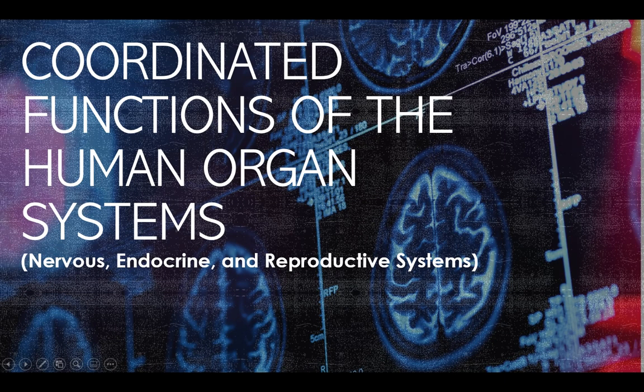Hello students and welcome to another science online class. Welcome to the second quarter — at this point we will discuss biology. The first lesson in biology is coordinated functions of the human organ systems, specifically the nervous, endocrine, and reproductive system.